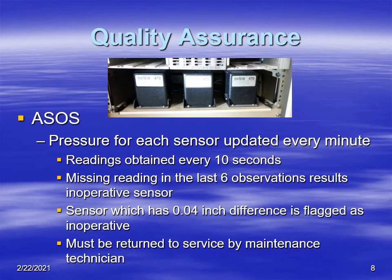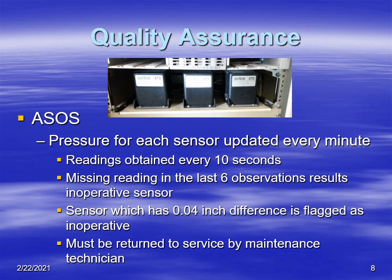If there's a missing observation from one of the pressure transducers, then that pressure transducer is flagged as being inoperative. If there is a difference of more than four one-hundredths of an inch of pressure between any of the sensors, then the one sensor that is most off is also flagged inoperative, and it can only be returned to service by a maintenance technician. So this provides a little bit of background on quality assurance and also exposure error as it relates to pressure measurements.